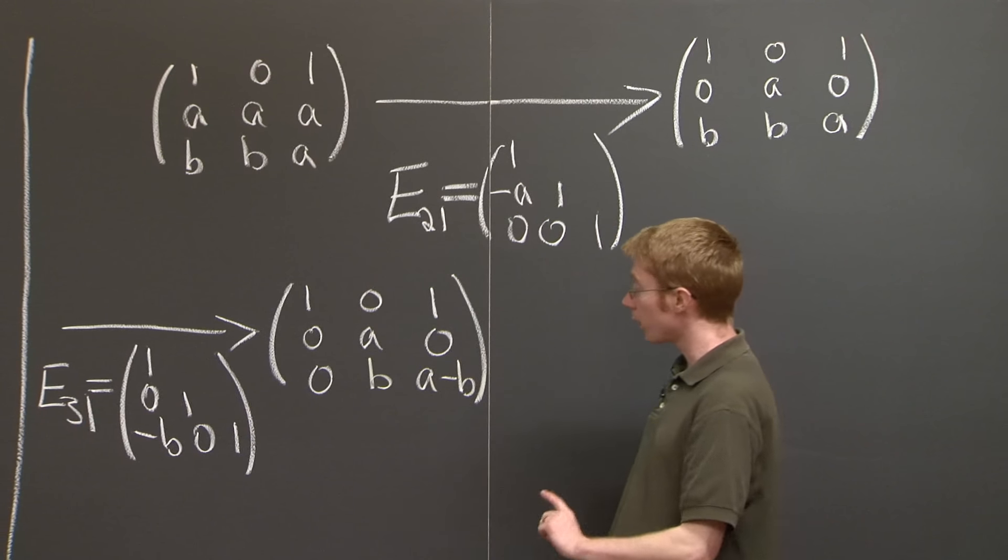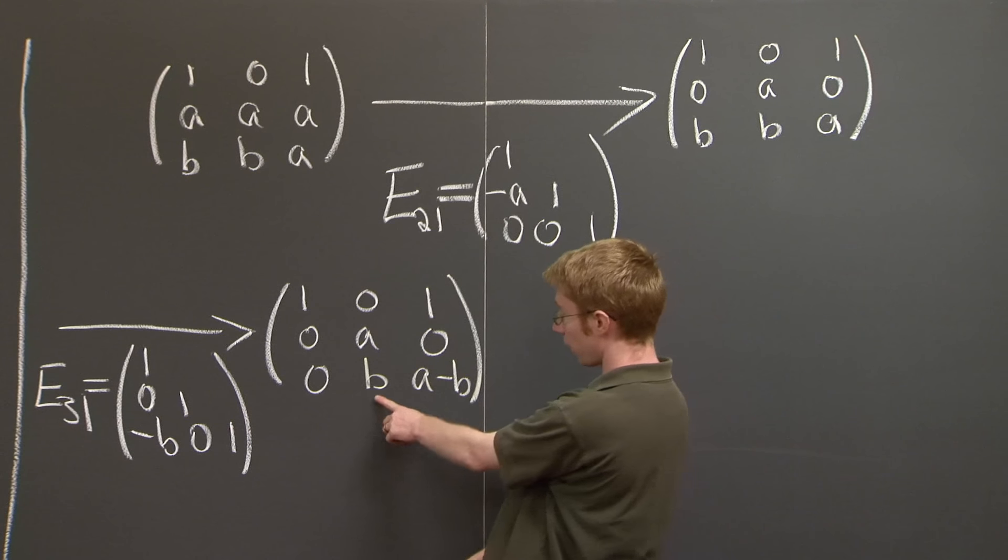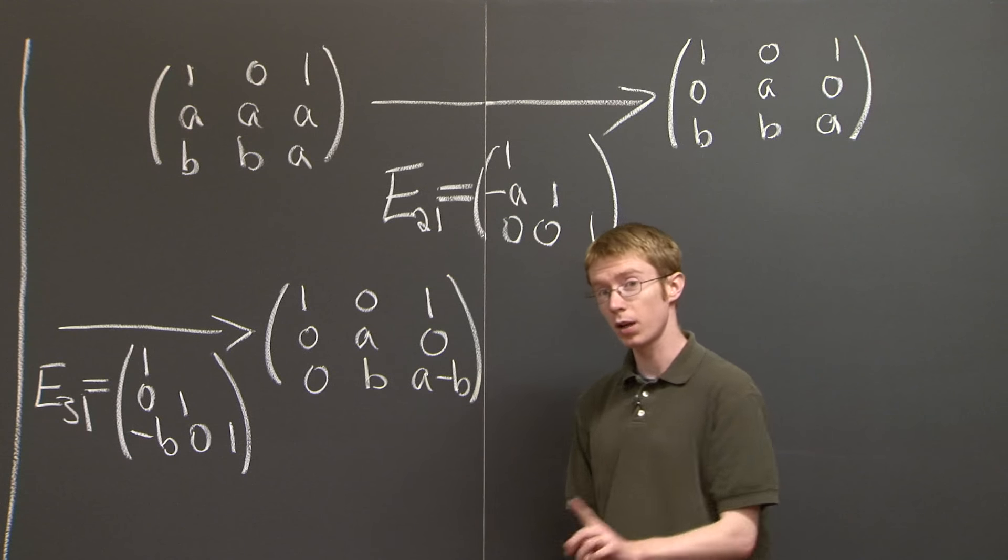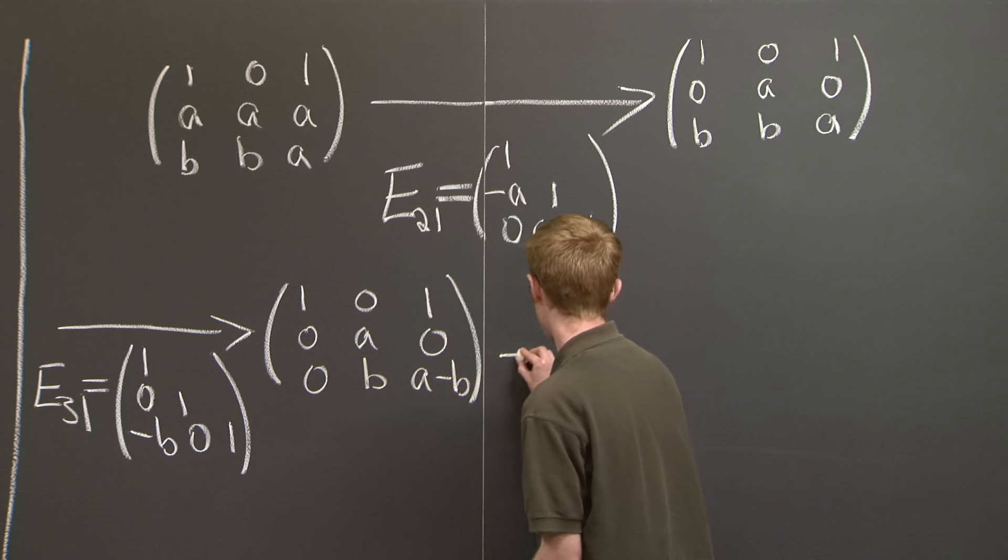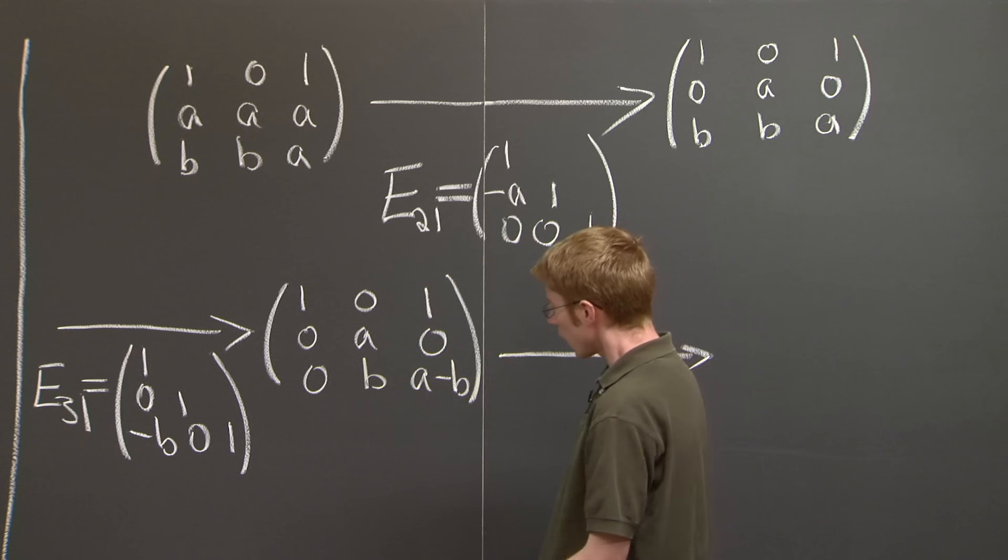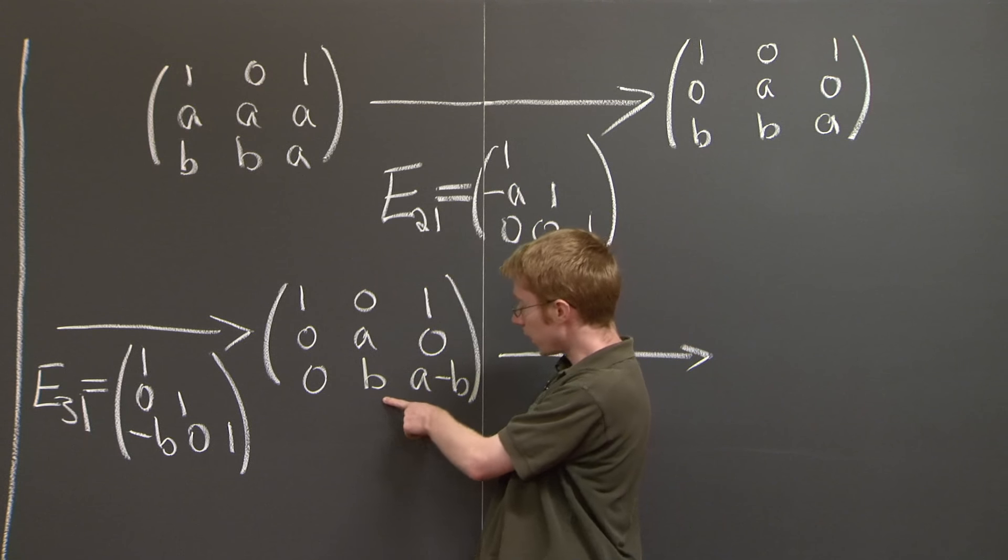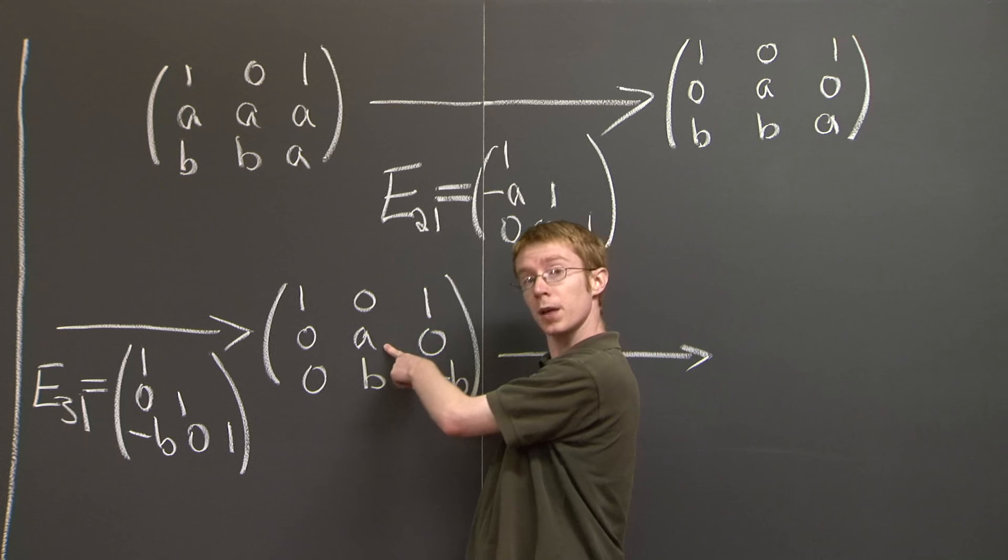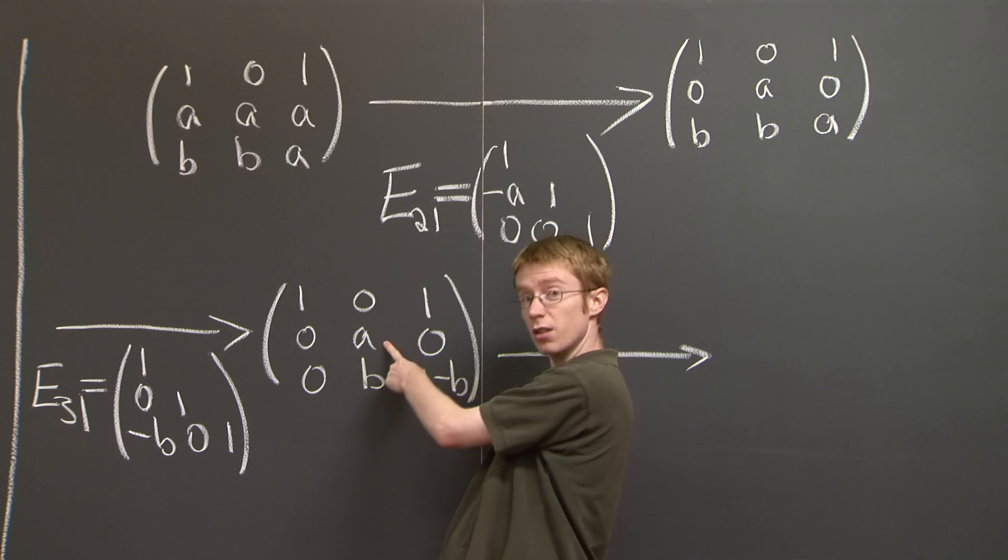Now, we only have one step left. We only need to eliminate one last entry. But this one's a little tricky, so let's be careful. In order to eliminate this b, we need a to be a pivot. In particular, we need a to be non-zero.